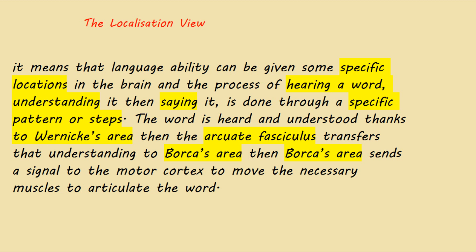Then the arcuate fasciculus transfers that understanding to Broca's area, where we store language. Broca's area sends a signal to the motor cortex to move the necessary muscles, because the motor cortex is responsible for moving the muscles in the human body, including the mouth and larynx — everything we use to speak and utter words. The motor cortex then moves the muscles, and the human being articulates the word. This is the localization view.